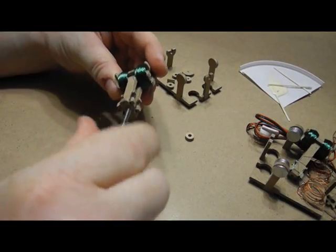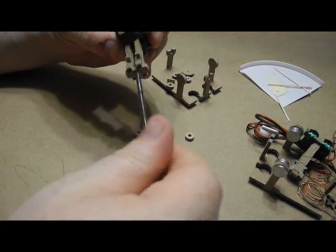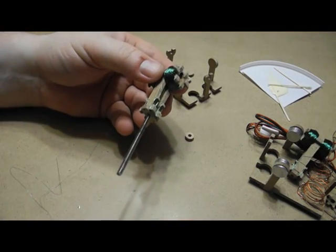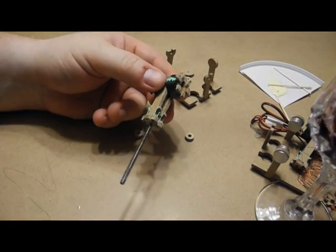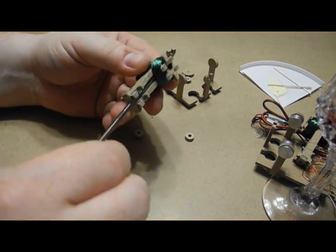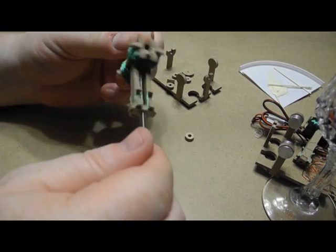The holes are cut so that it just threads onto the six thirty-two shaft nicely. Let's have a sip of wine. This motor goes good with red wine. So there, the shaft is in the armature now.